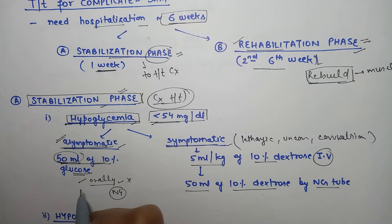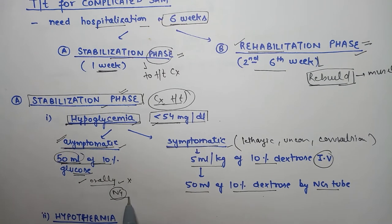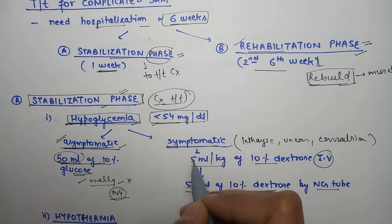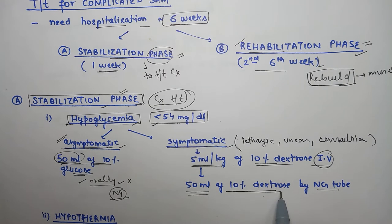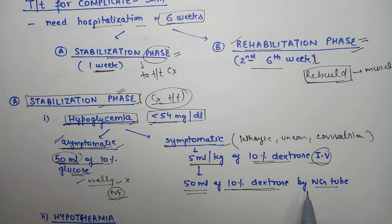If symptomatic, give IV 10% dextrose 5ml per kg, followed by 50ml of 10% dextrose by NG tube. So first IV, then NG tube.